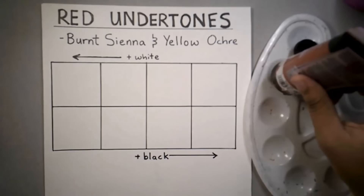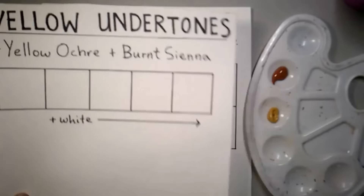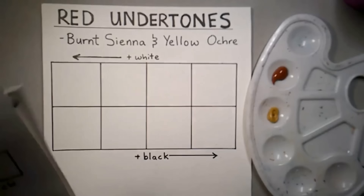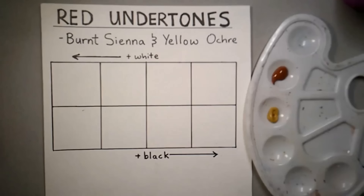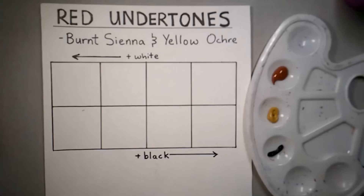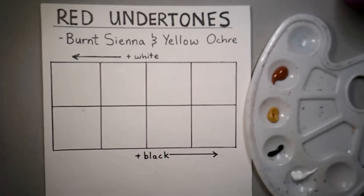I'm going to be addressing undertones, different types of skin tones and which races usually have a certain type of undertone — that includes red undertones, yellow undertones, and blue undertones. We'll start with red, and for this you're going to need burnt sienna and yellow ochre, plus white and black paint. You can mix skin tones using a basic palette of red, yellow, and blue — that makes brown — but it's very difficult to get the right shade and requires a lot of testing. I really do recommend getting these colors because it makes life a whole lot easier.